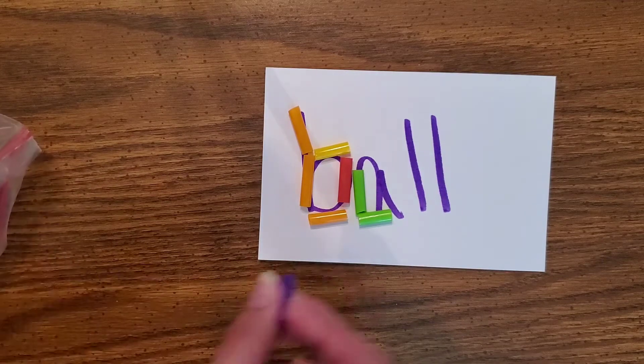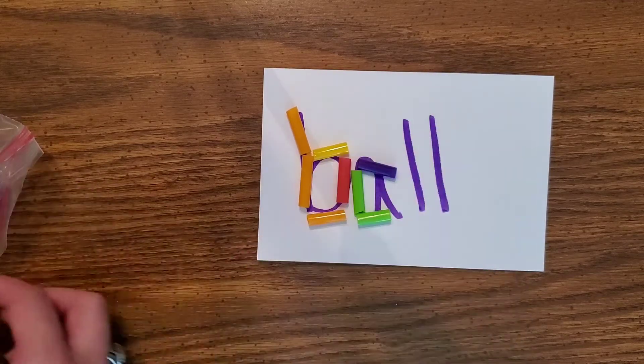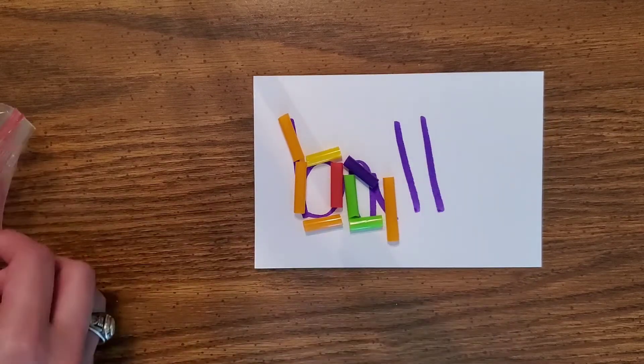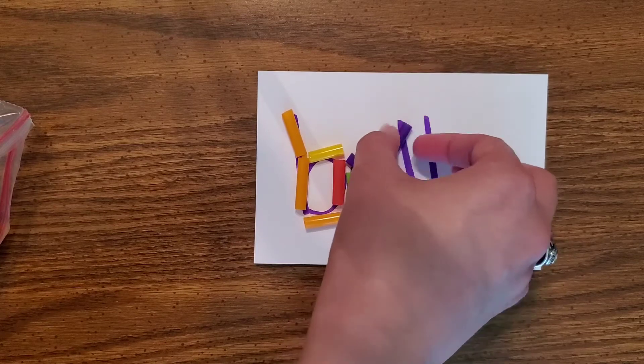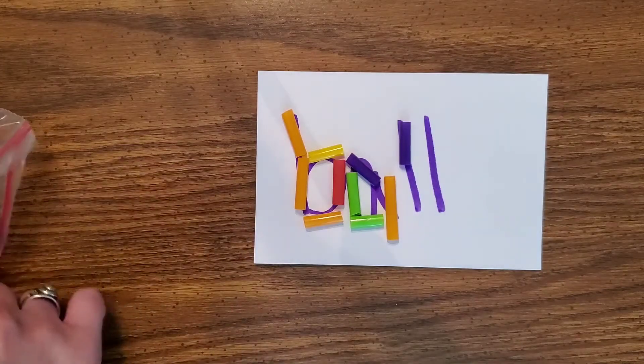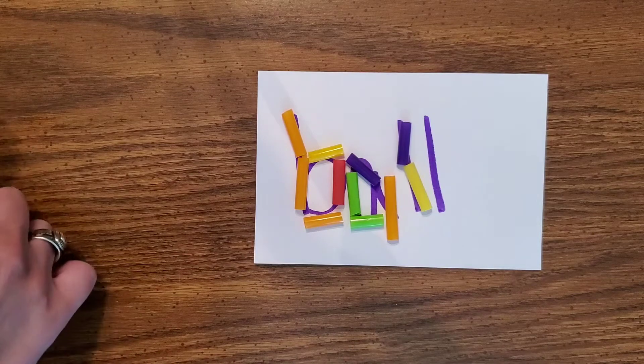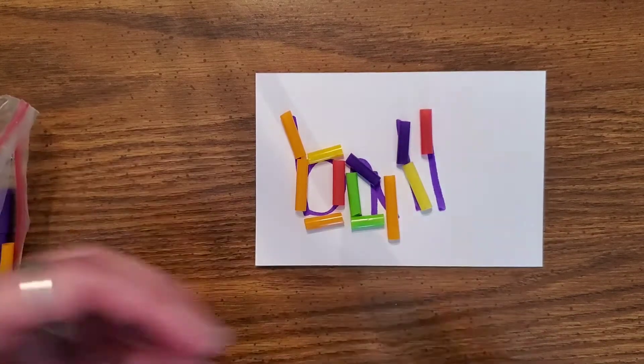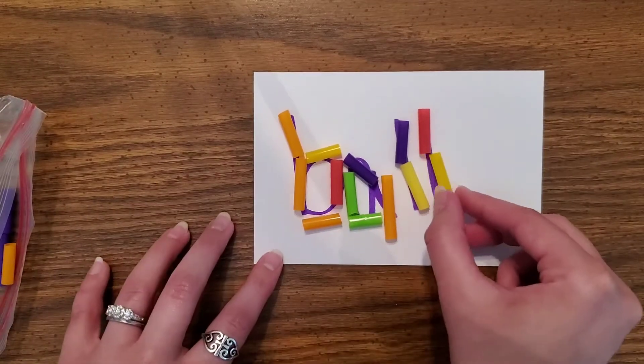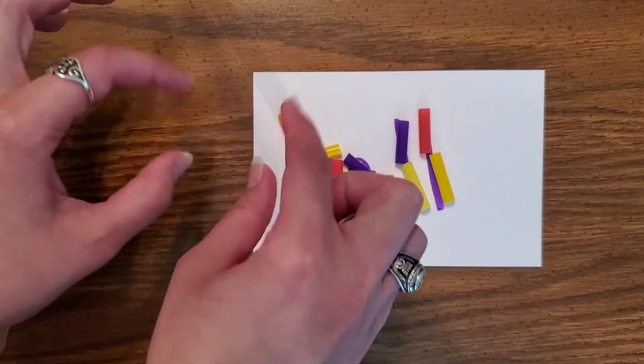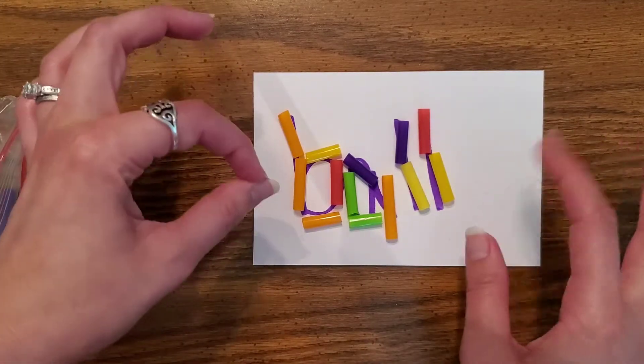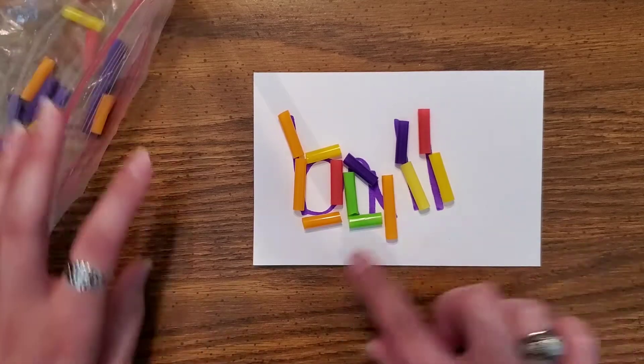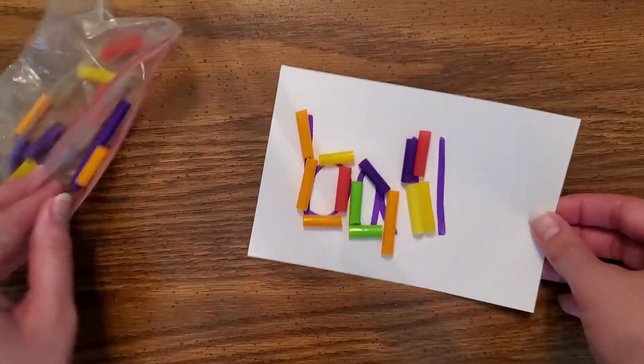B says B, A says A, L L L and then the other L. This helps a lot with the fine motor skills for the little ones so you have the pinching of your fingers building those muscles helping them get prepared to hold the pencil. So ball, clean that up.